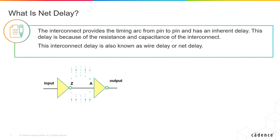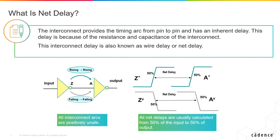Your design layout uses different metal layers and vias to connect the various gates or cells in your design, and thus they are called interconnects or wires. The metal layers inherently have a delay because of the resistance and capacitance, i.e., the physical properties of the metal layers themselves. This inherent delay is also known as interconnect delay, wire delay, or simply net delay.